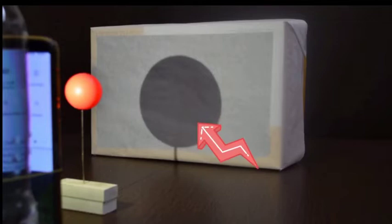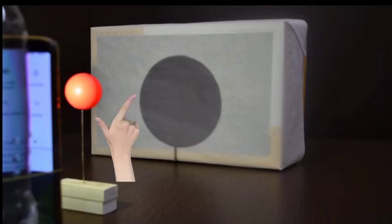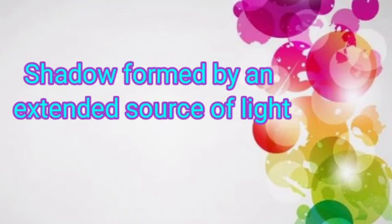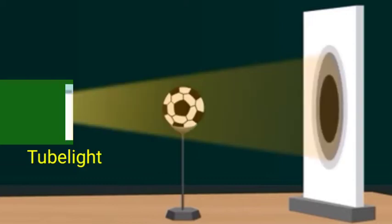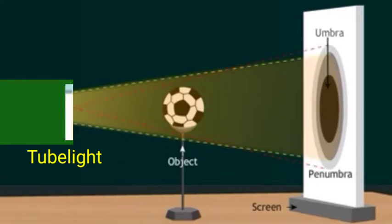Second, shadow formed by an extended source of light. When the ball is placed between an extended source of light and the screen, you will again see a shadow appearing on the screen, but it will have a dark patch called umbra surrounded by a partially dark patch called penumbra.